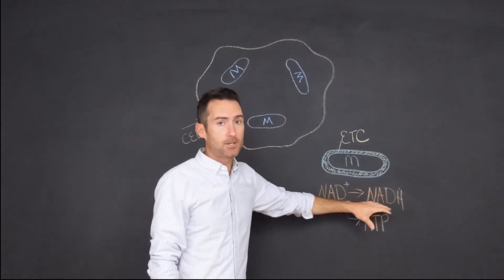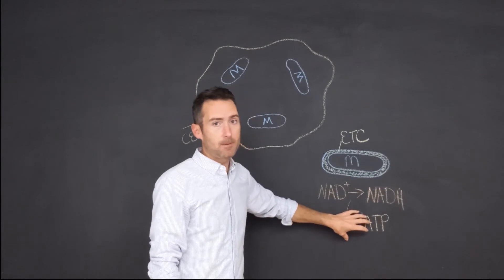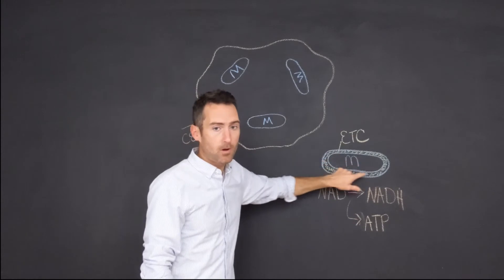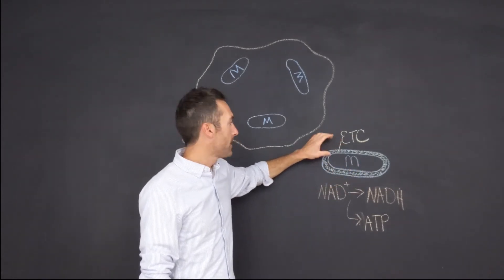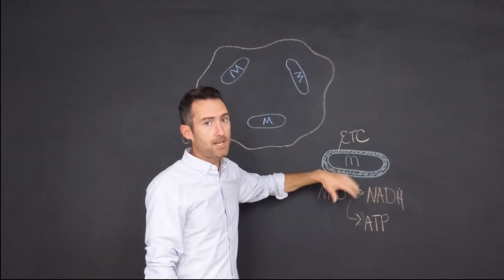and making NADH. In turn, that process converts to ATP, and that all happens within the electron transport chain within the mitochondria. In between the outer and inner membrane is the electron transport chain. The electron transport chain produces ATP